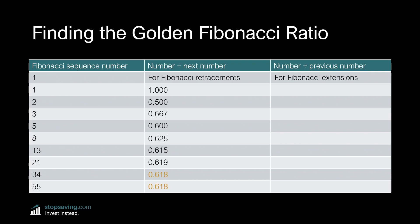And then there's Fibonacci extensions. This time you divide the current number in the sequence by the number before it. 1 divided by 1 is 1, 2 divided by 1 is 2, and 3 divided by 2 is 1.5. As the sequence gets bigger, your answer gets closer and closer to 1.618 — the golden ratio for Fibonacci extensions. And here's where it gets even more interesting: if you divide 1 by 0.618, you get 1.618. And if you divide 1 by 1.618, you get 0.618.